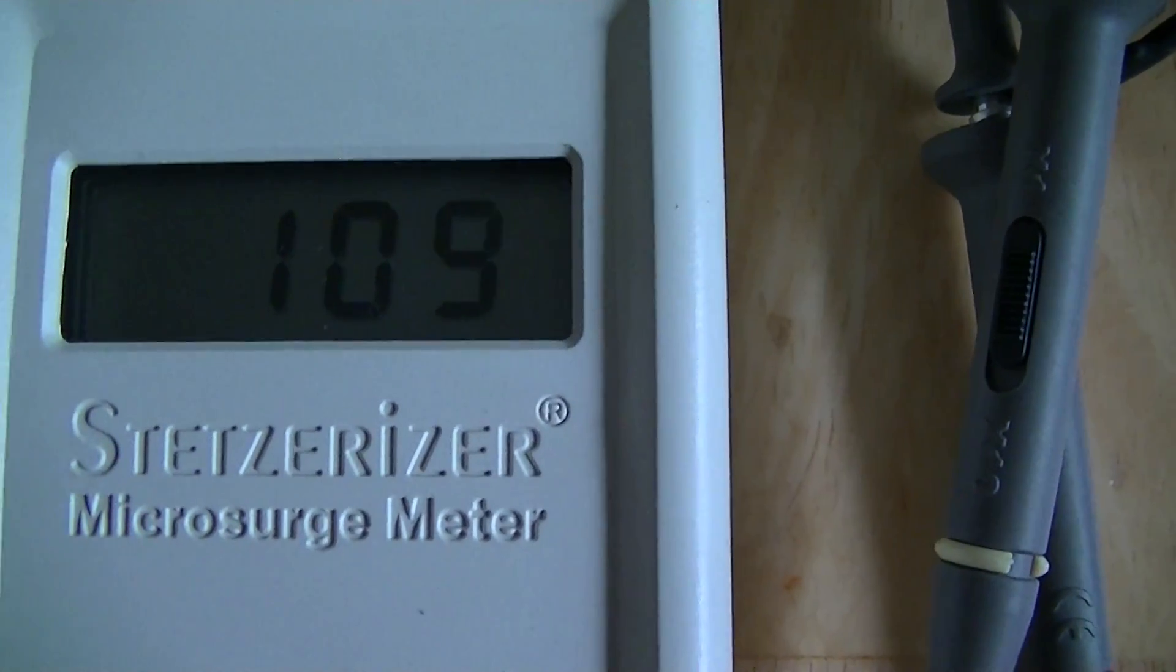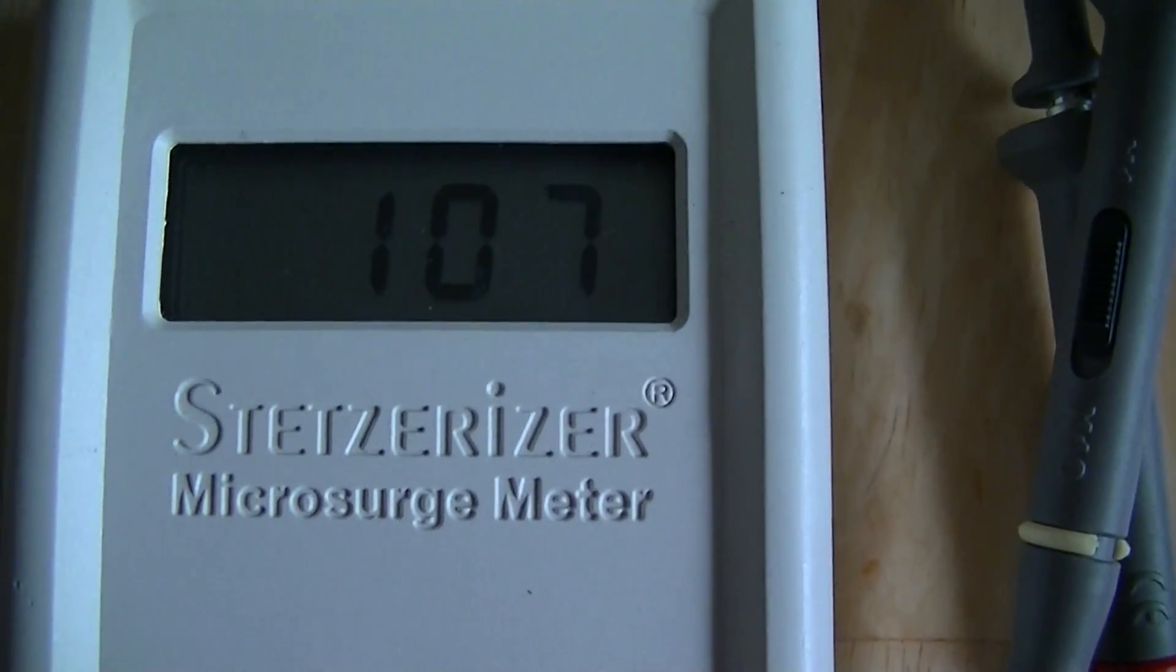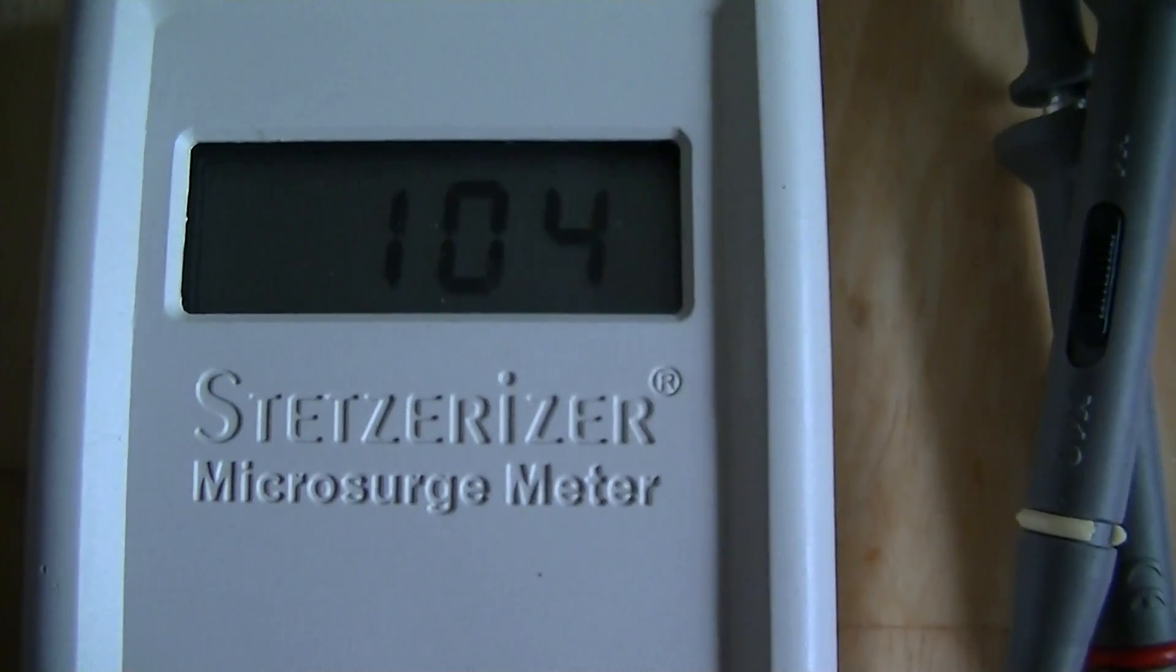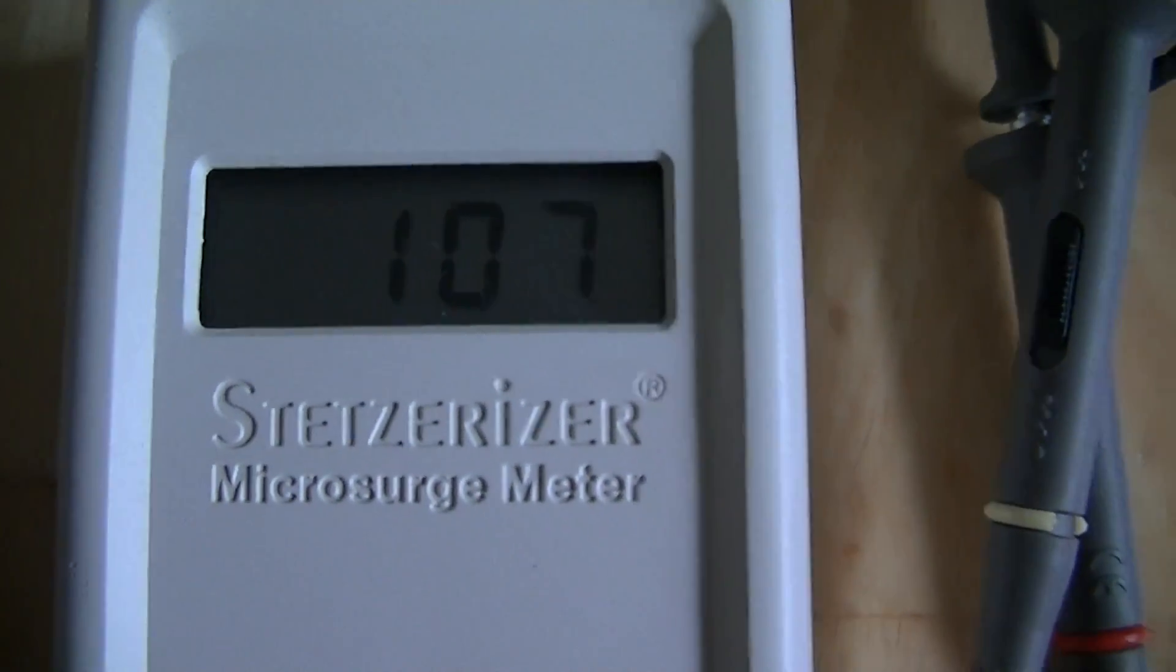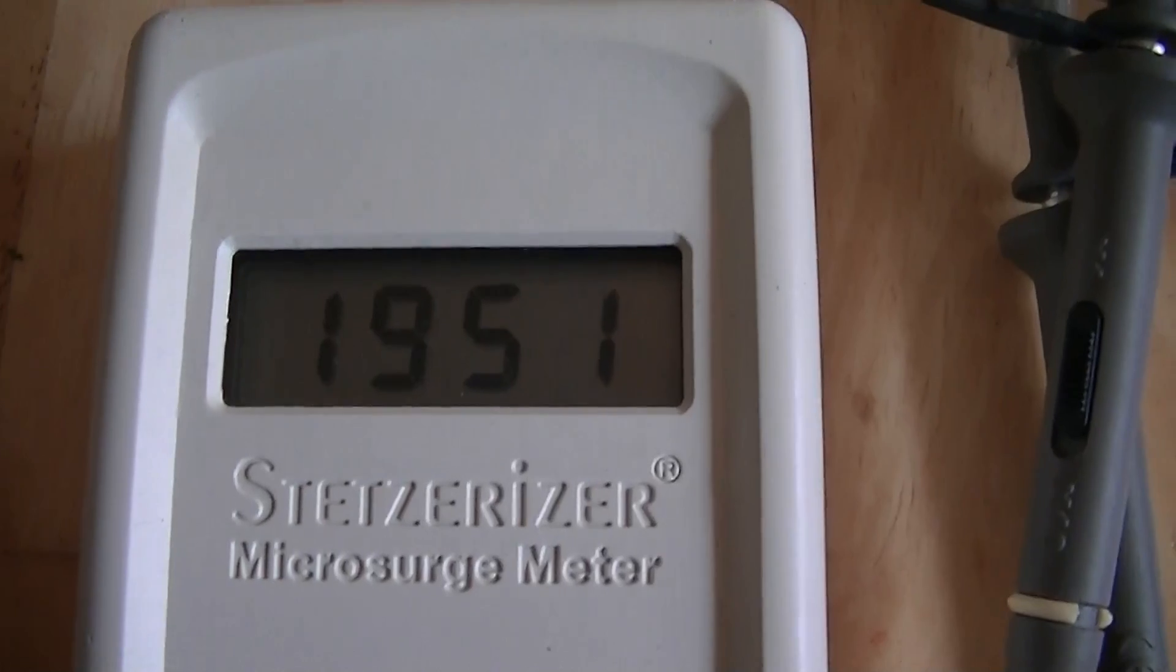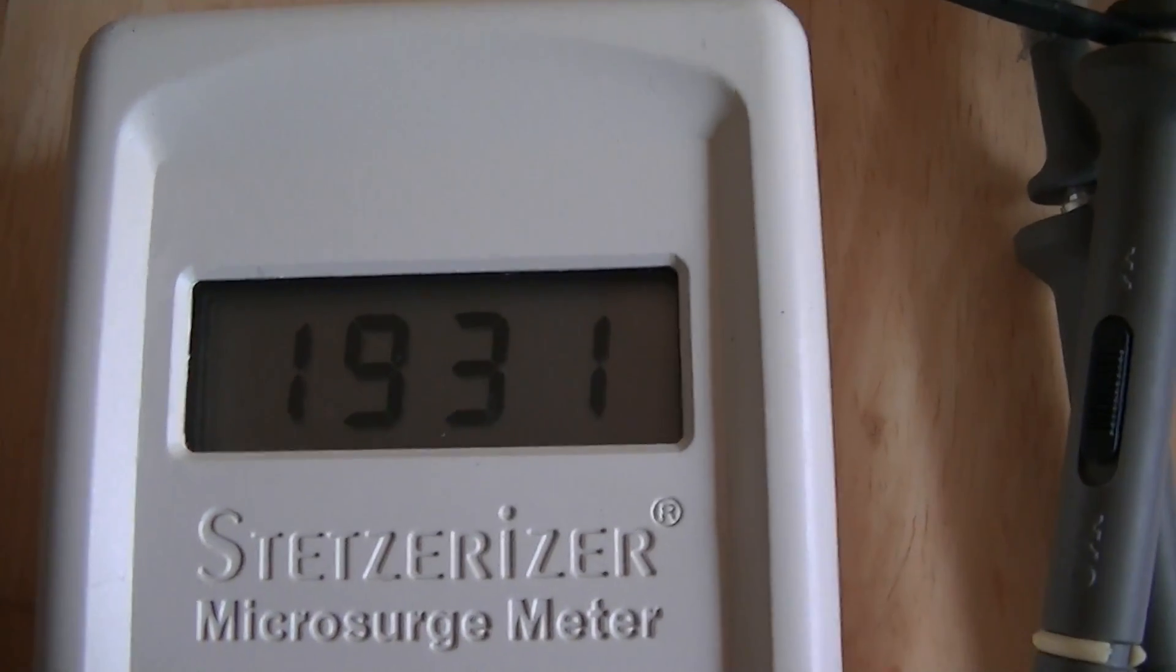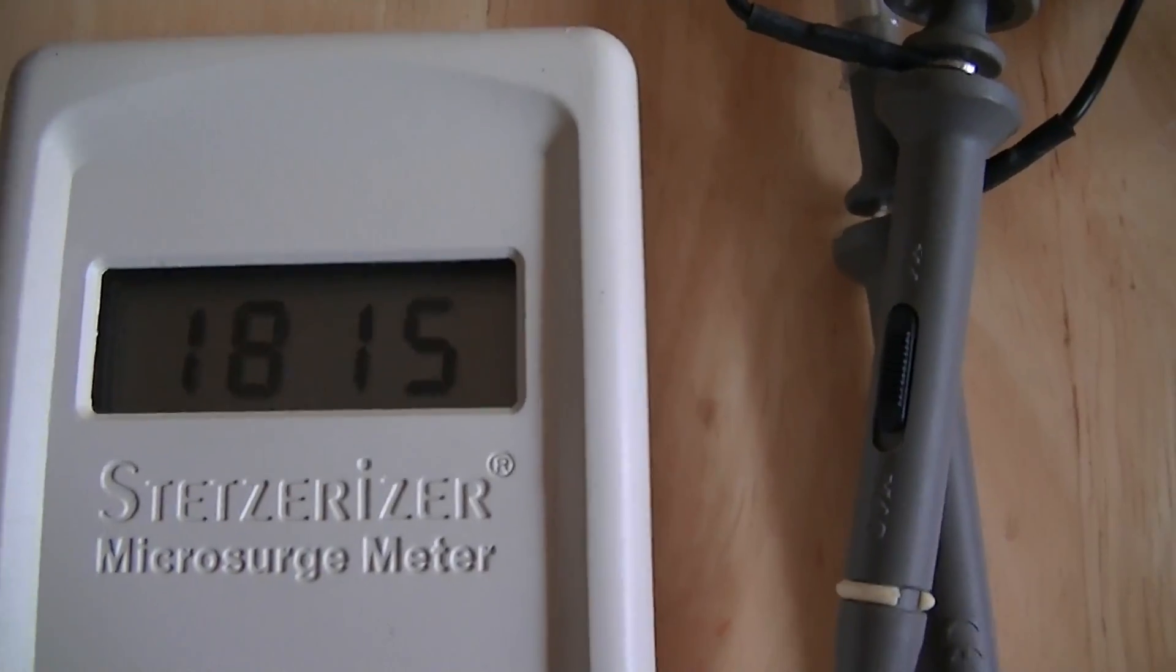Currently we're reading 105 on the AC electrical system, and this measures in what's known as GS units. So we're going to switch on these two lights and see what happens. The lights are on, and you see we're almost off the scale. We have 1900 GS units which is very, very high.